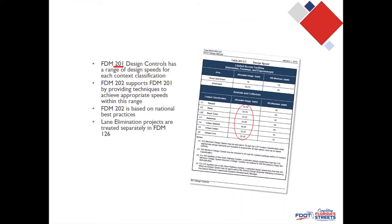A lot of times folks will do a lane elimination or road diet project with a goal of reducing roadway speed. While we acknowledge that lane eliminations can have that effect, we don't consider lane elimination itself to be a speed management tool — it has its own chapter, FDM 126, with its own criteria and studies. But if you are doing a lane elimination to achieve lower operating speed, we encourage you to use FDM 202 techniques on your new configuration. Lane elimination is not necessarily a speed management technique as we're using it here at Florida DOT.